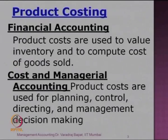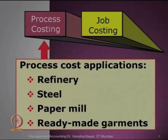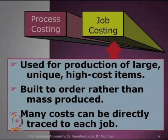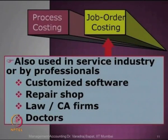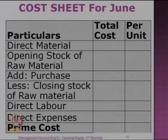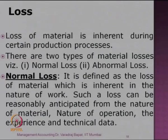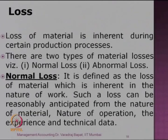Let us now look at the cases for process costing and glance through what we have covered. We discussed the use of product costing and the two types. This type of cost sheet is prepared for job costing, and we will see one case today. We also discussed the treatment of losses — there are two major types: normal loss and abnormal loss.